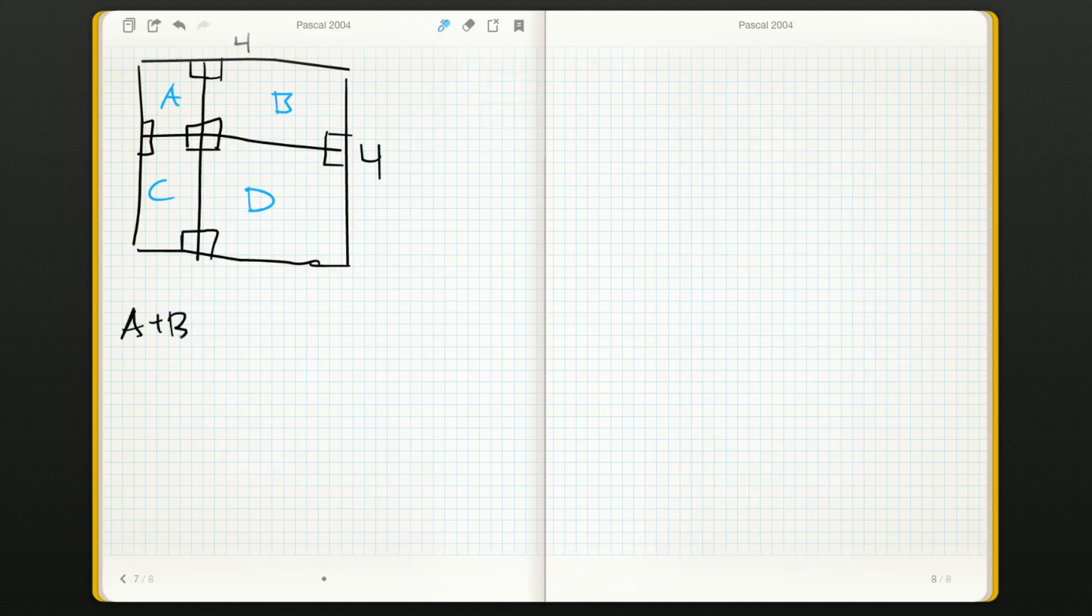A plus B plus C plus D equals area, and that's going to be, it's an area of a square, so it's 4 squared, which is 16.